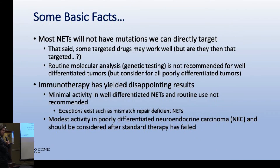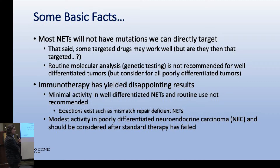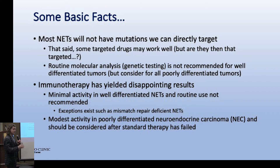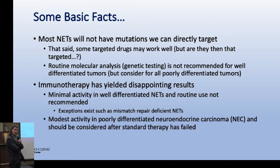A few basic facts on targeted therapy: people ask about genetic testing to find targetable mutations. Most low-grade neuroendocrine tumors don't have recurrent mutations targetable with currently available drugs - the drugs of tomorrow might change that. For immunotherapy, for well-differentiated neuroendocrine tumors, it does not work really well - tested repeatedly and it just doesn't work. For high-grade neuroendocrine carcinomas, immunotherapy works better, not great, but definitely better.